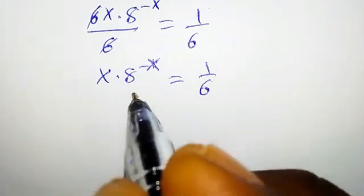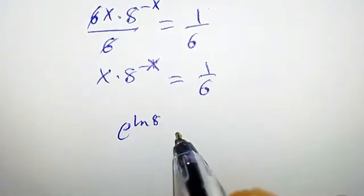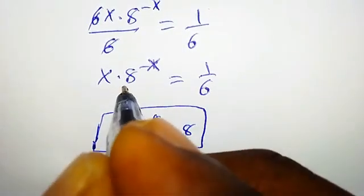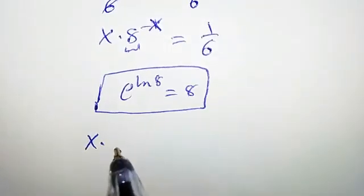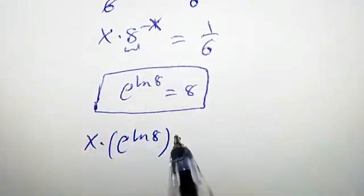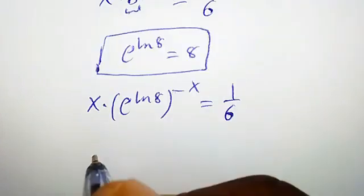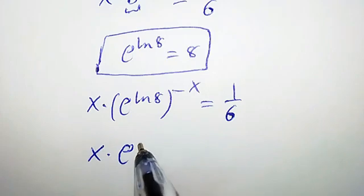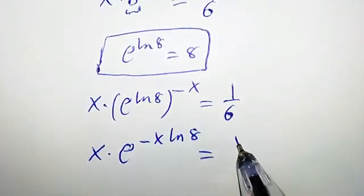Let's proceed further. Don't forget that we can rewrite 8 as e to the power of ln 8. So we are going to replace this 8 with that. So we're going to have x times e to the power of ln 8, and this power is negative x, so it becomes x times e to the power of negative x times ln 8 equal to 1 over 6.